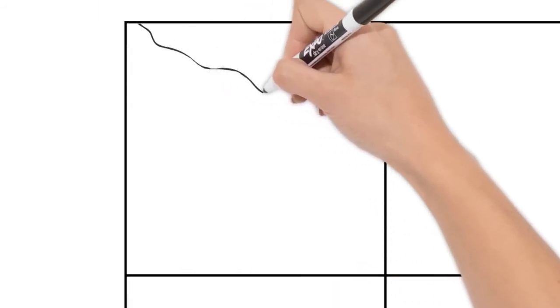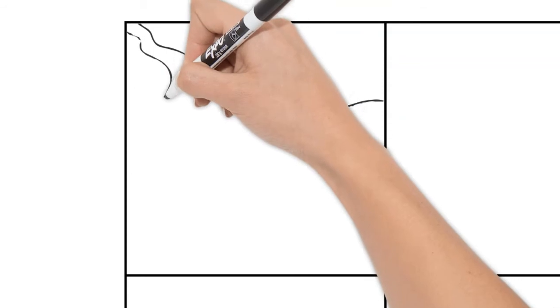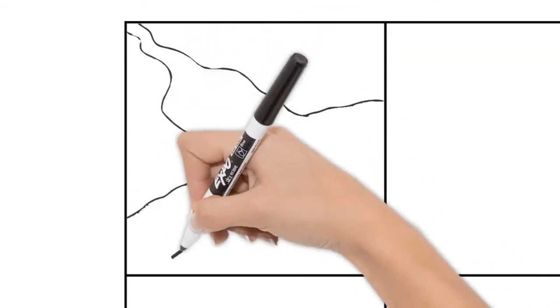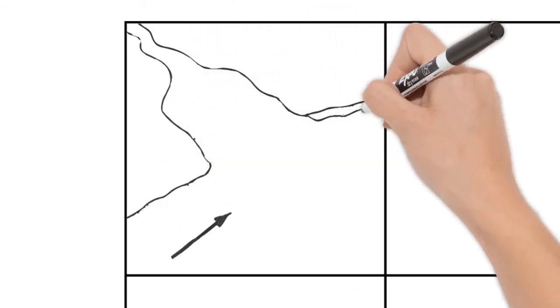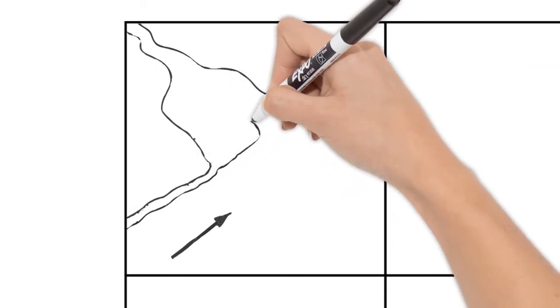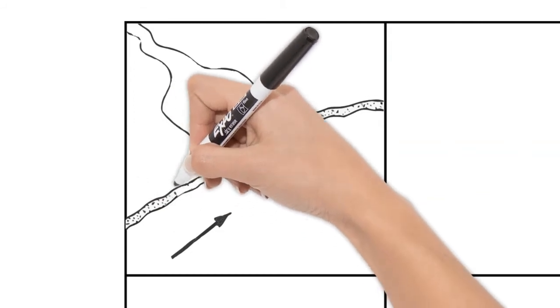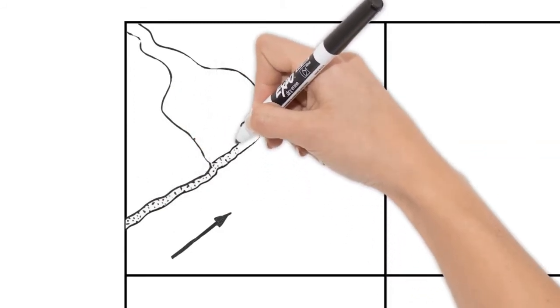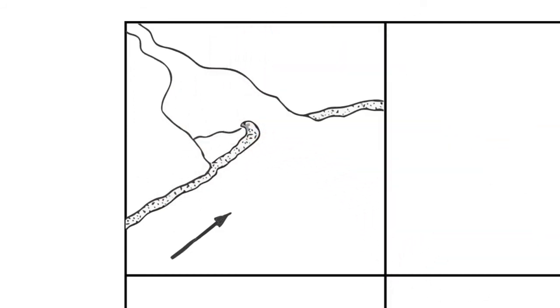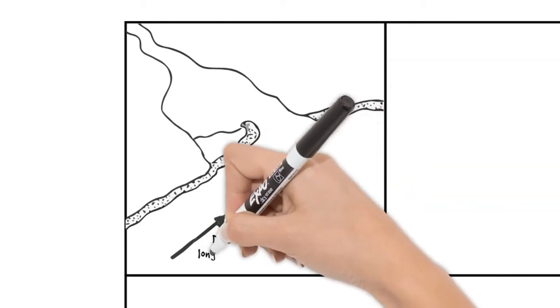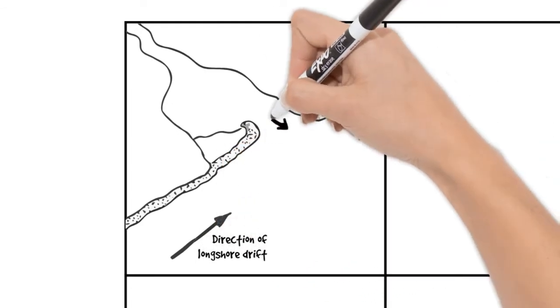The first diagram I'm going to draw is a spit. So we're drawing a river mouth here. I'm going to show the direction of longshore drift with an arrow and show how the spit extends out into the river mouth. The sediment is deposited on the river bed and then extends outwards.